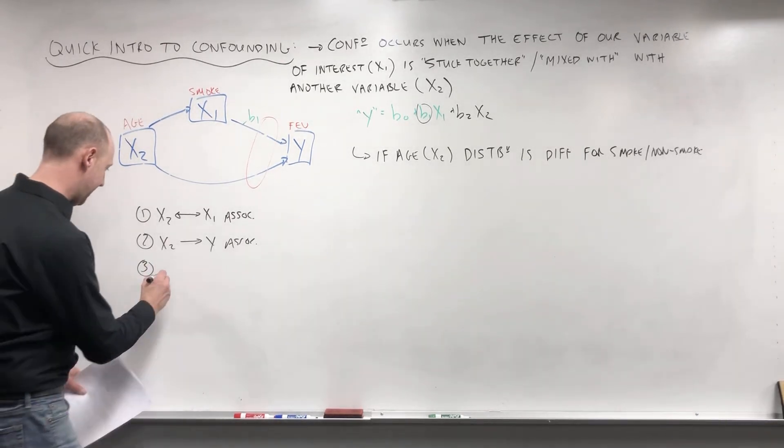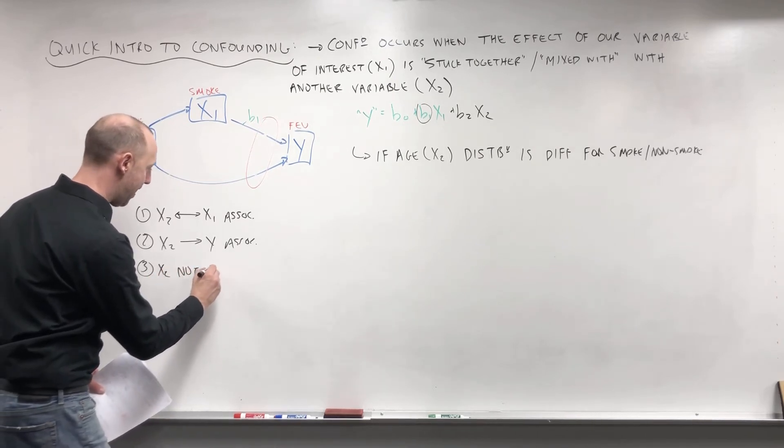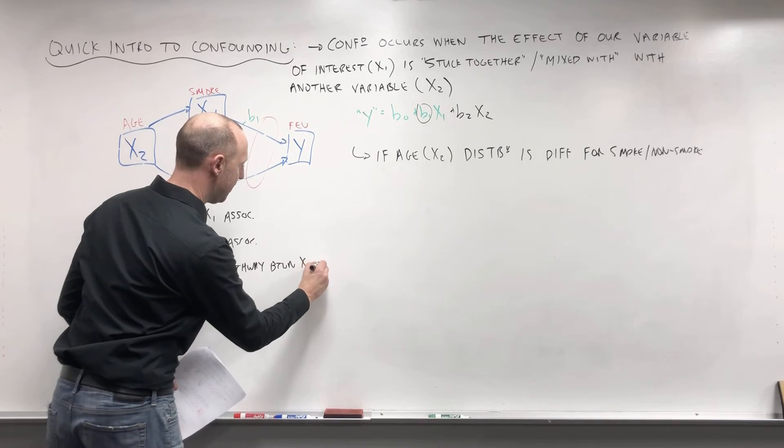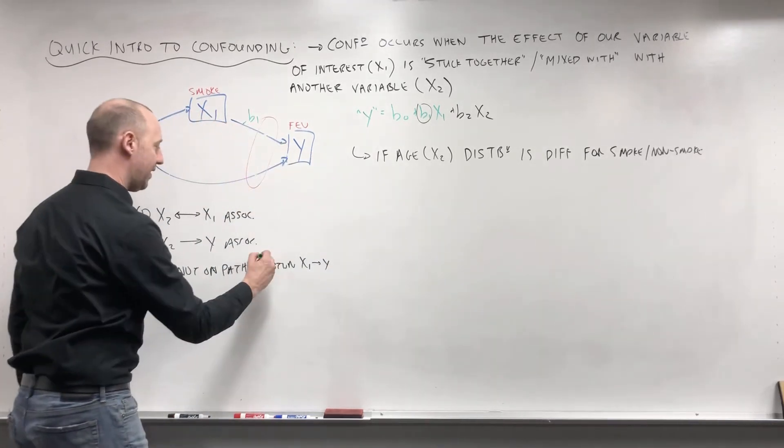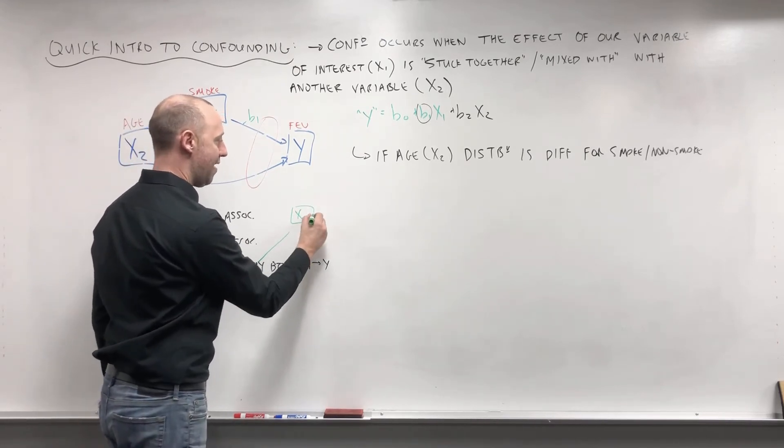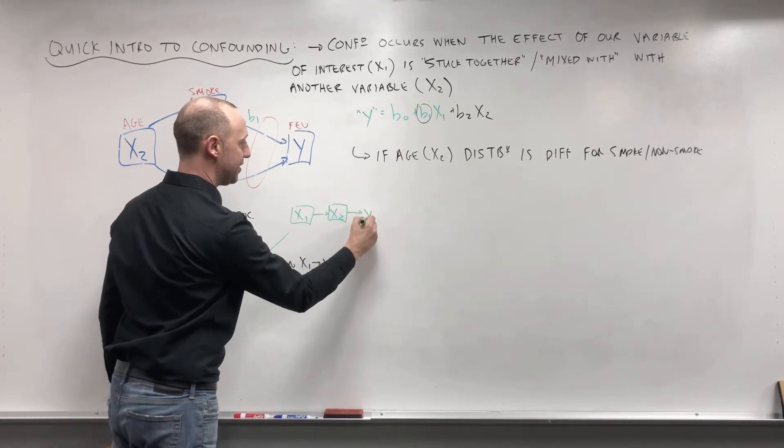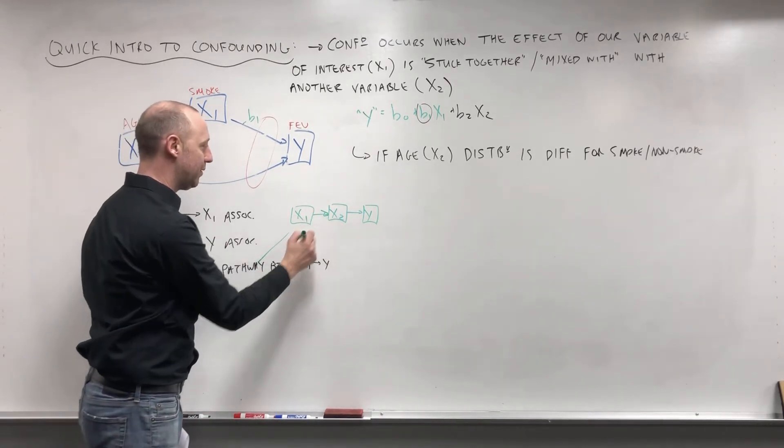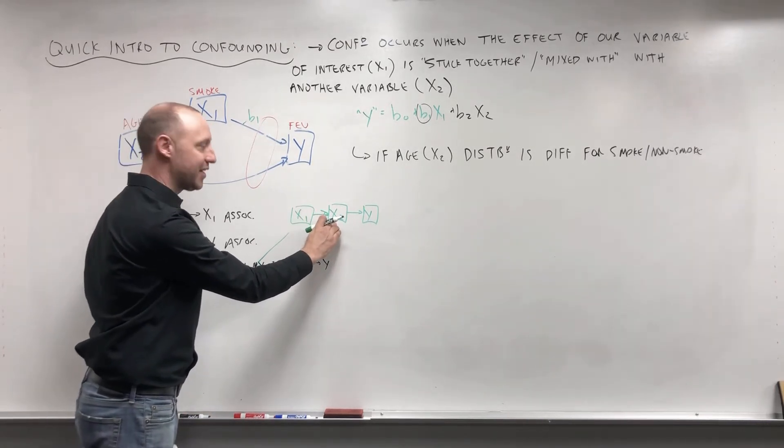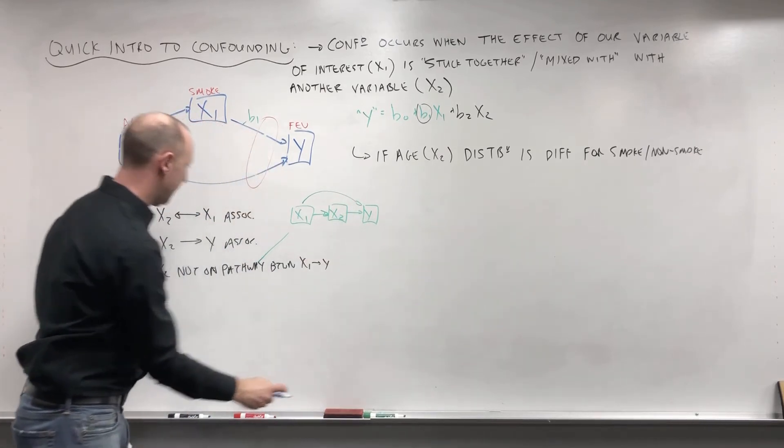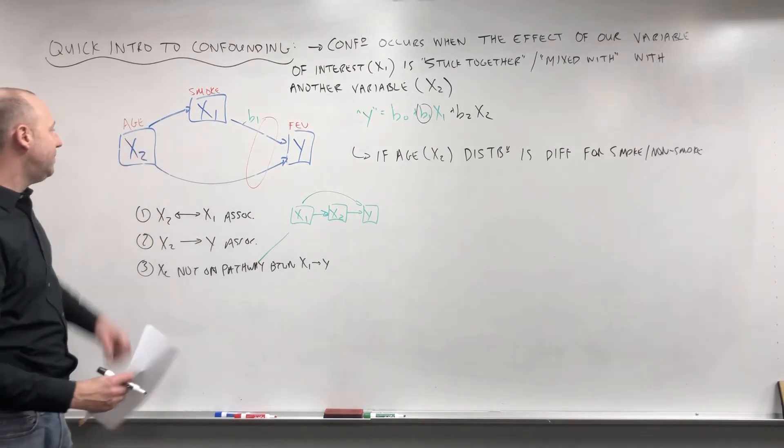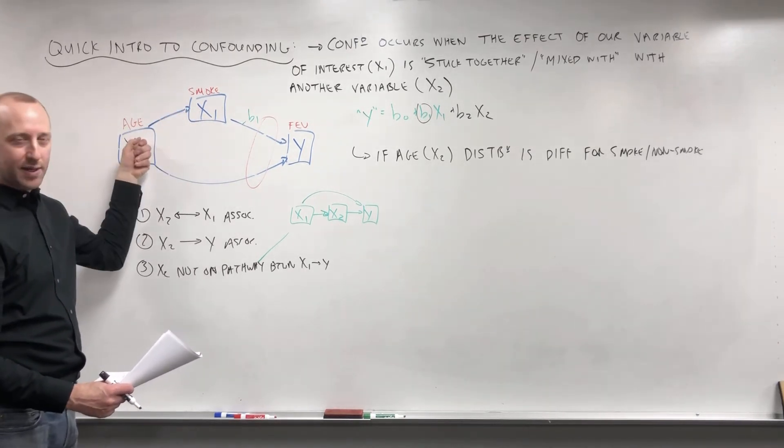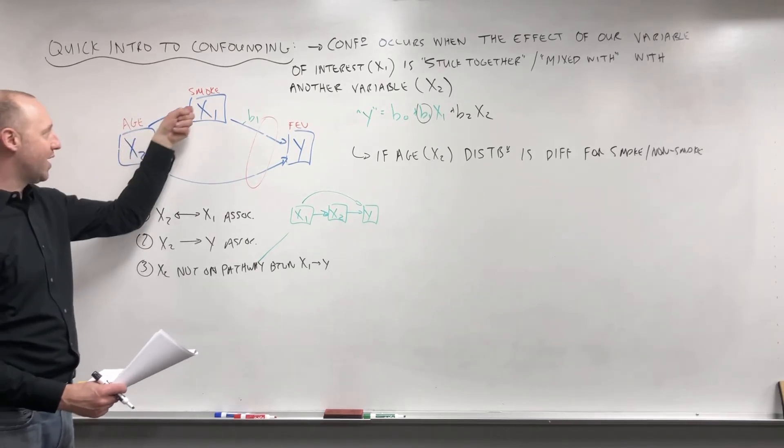An important one is that X2 is not on the pathway between X1 and Y. So what we mean by that is we don't have X1 having a direct effect on X2 which then has an effect on the outcome. We'll talk about these ideas later—we're going to call this mediation or these are mediators. We're saying that confounding cannot be when X1 directly affects X2 which then affects the outcome. So X1 and X2 are associated, but it's either that X2 affects X1—age affects your likelihood of smoking—or these two are associated but not with X1 causing X2 or X1 directly affecting X2.